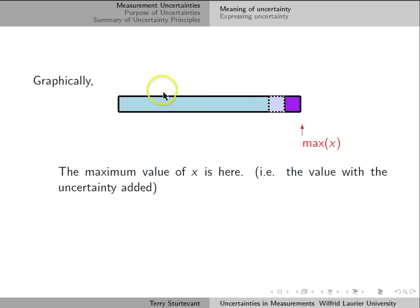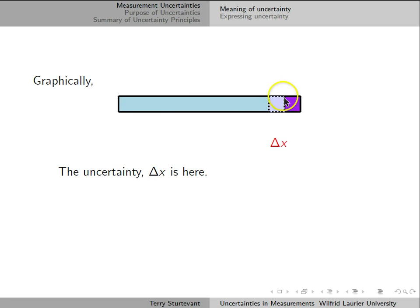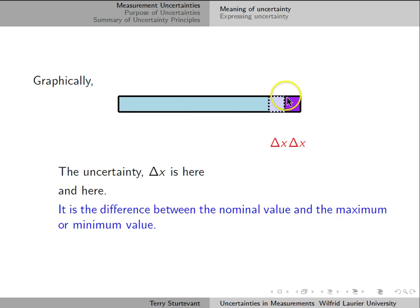The maximum value x can have is the whole thing. So the uncertainty is the distance between here and here, and also between here and here. In other words, the uncertainty is the distance between the nominal value and the minimum value, and also the distance between the nominal value and the maximum value.